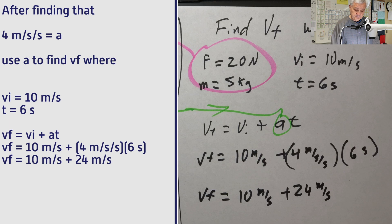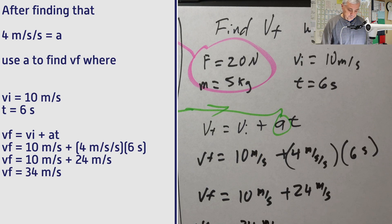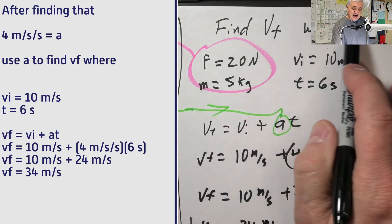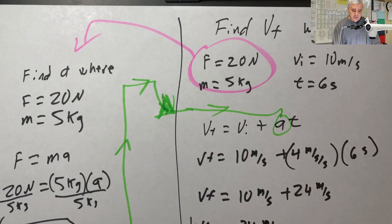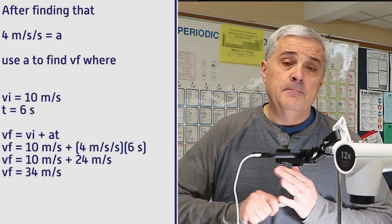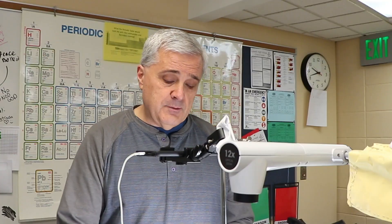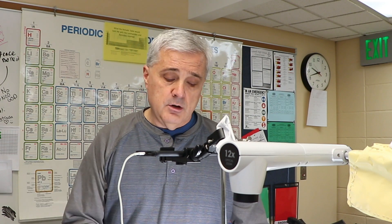It's a velocity — time times acceleration gives you velocity. 10 plus 24 equals 34 meters per second. That's the answer. That's how you find final velocity when you are given force, mass, initial velocity, and time. Force and mass give you acceleration, and then you use that in the v sub f equation.